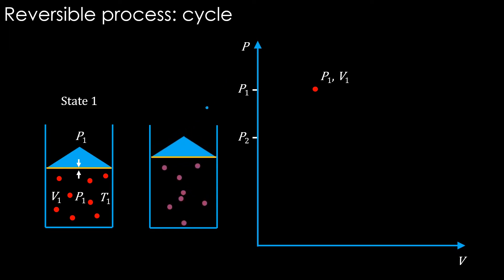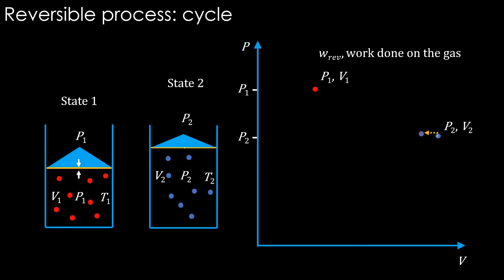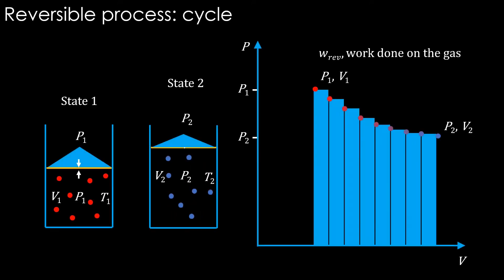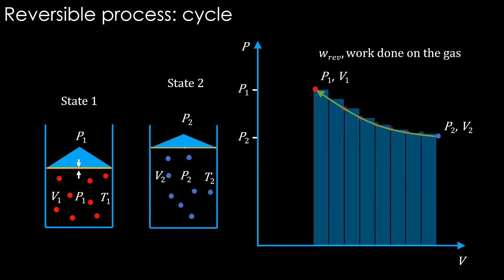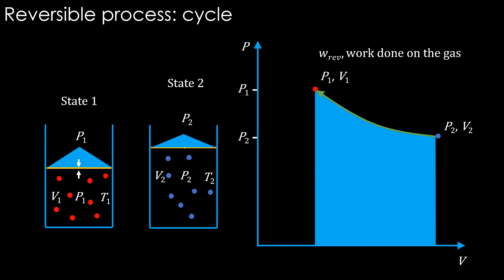Imagine adding the mass stone by stone to achieve state one. The work done in each step will be these areas. When the size of the masses approach zero, work done is eventually the area under this curve. The area is equal to that in the reversible expansion but negative.